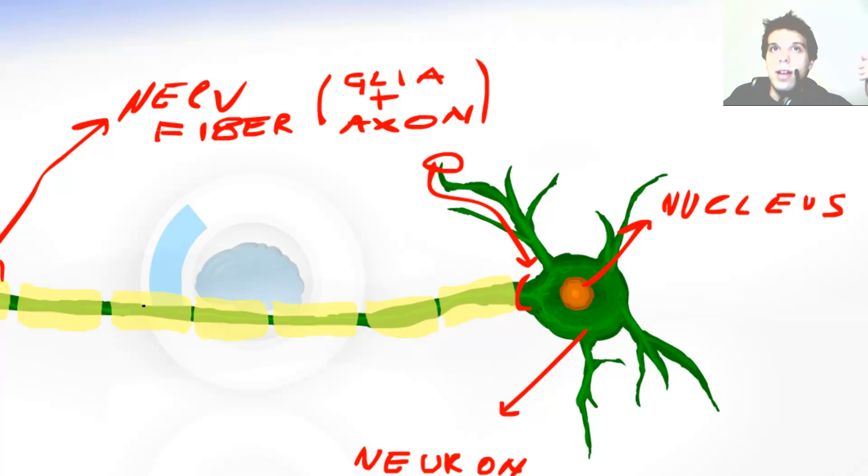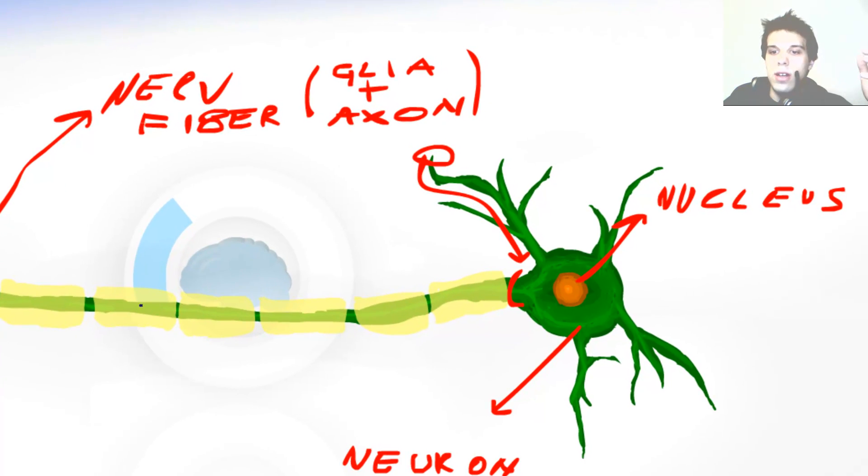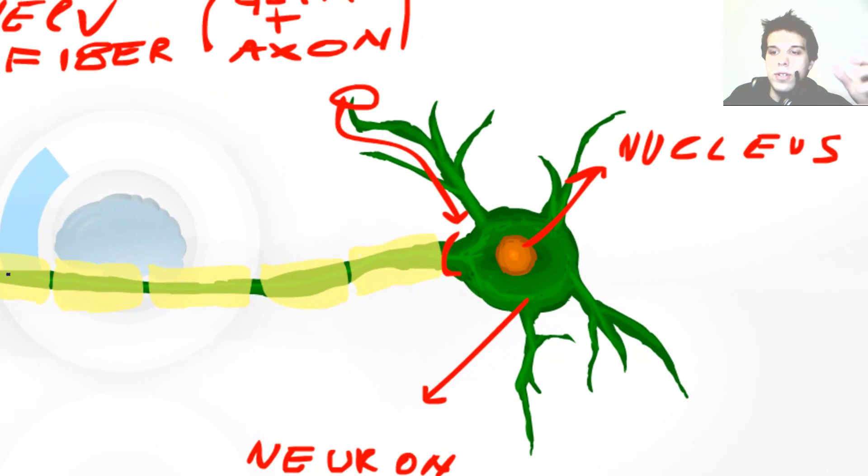Myelin is the electrical material that means it electrically insulates the axon and the axon transfers the signal faster.